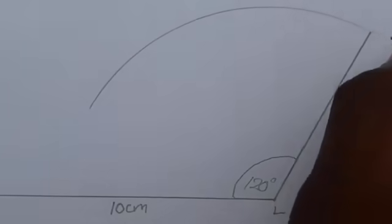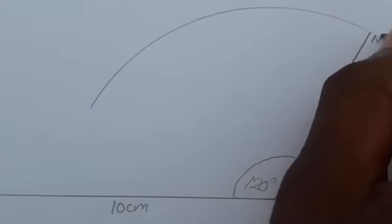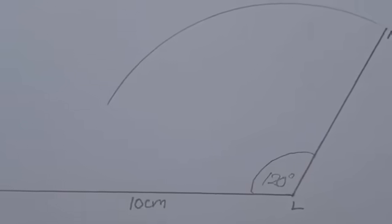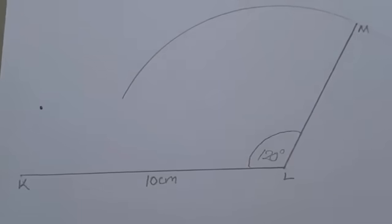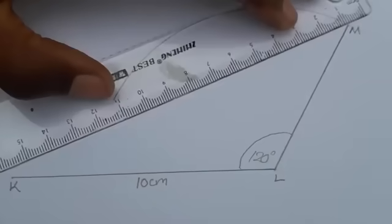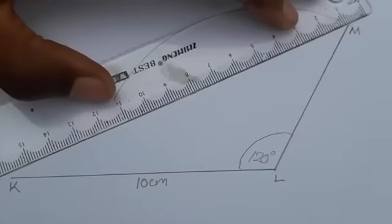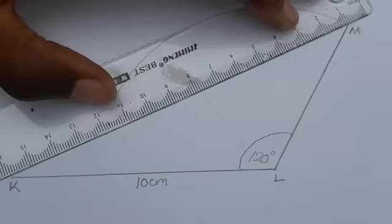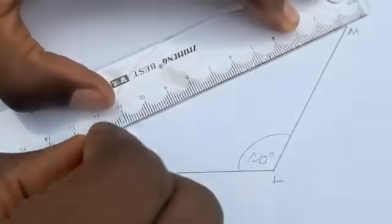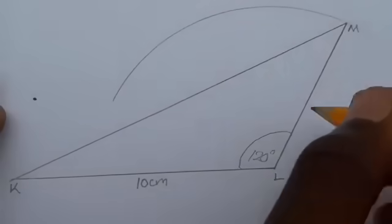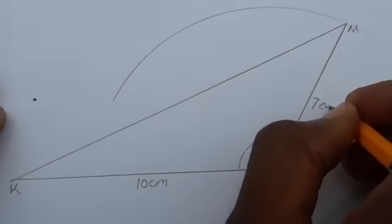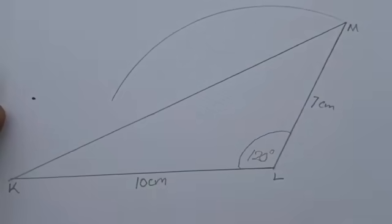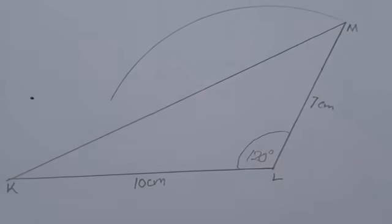This is where M is. Remember, this is a triangle, so we need to join M to K. Also remember that LM, which they said is 7 centimeters, has been measured as 7 centimeters.